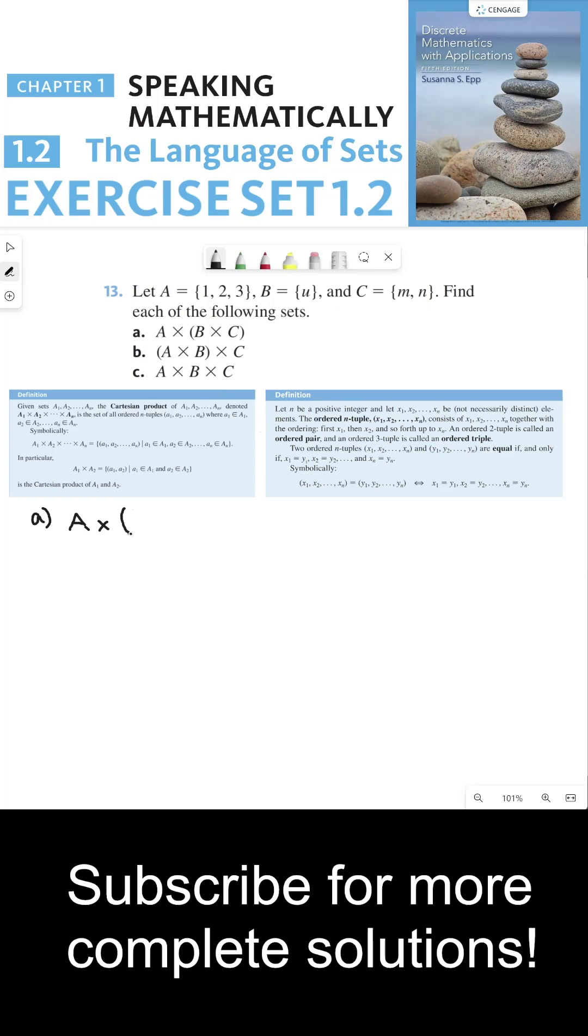Well, according to my order of operations, I should find the cross product between B and C before I find the cross product between A and B cross C. So what is B cross C? B cross C is the set of all ordered pairs where the first element in the ordered pair is an element from B, and the second element in the ordered pair comes from set C.